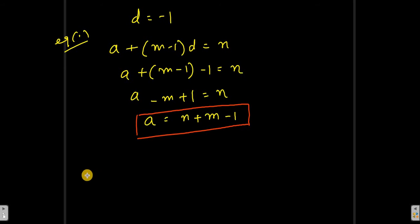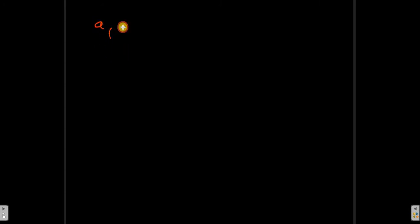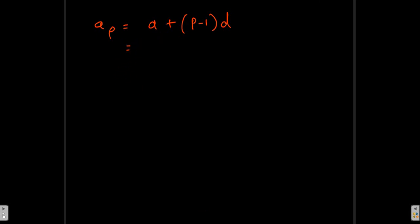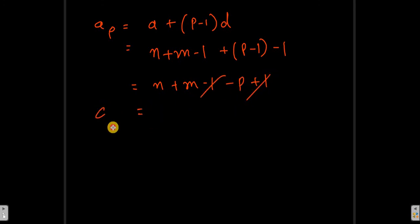Now going to the next step, we know a equals n plus m minus 1. We have to find the pth term. The pth term a_p equals a plus (p minus 1) into d. Since a and d are the same sequence, we substitute: a is n plus m minus 1, and d is minus one. So a_p equals n plus m minus 1 plus (p minus 1)(minus 1), which gives minus p plus 1. The ones cancel out.